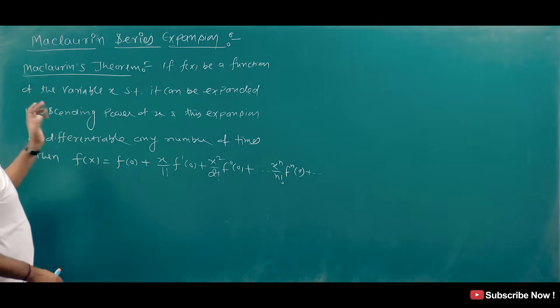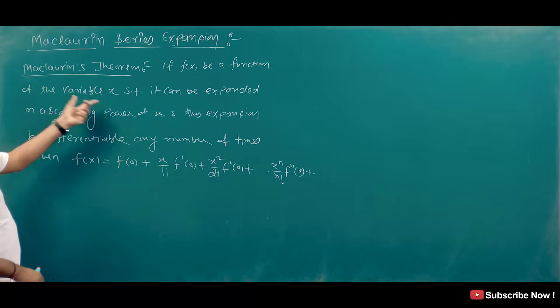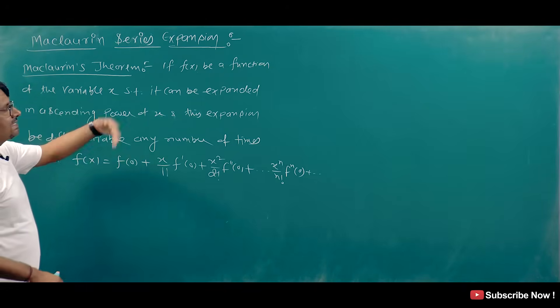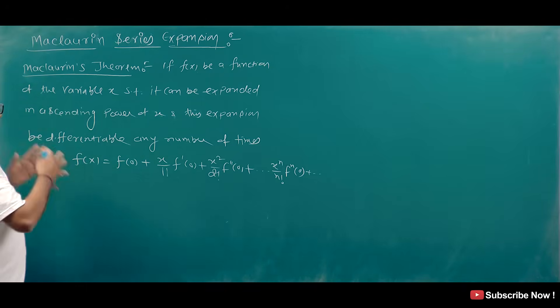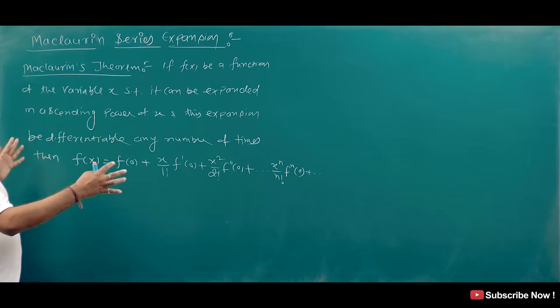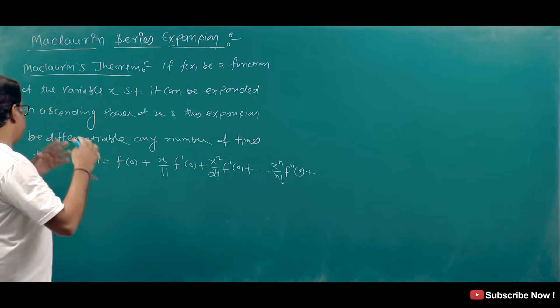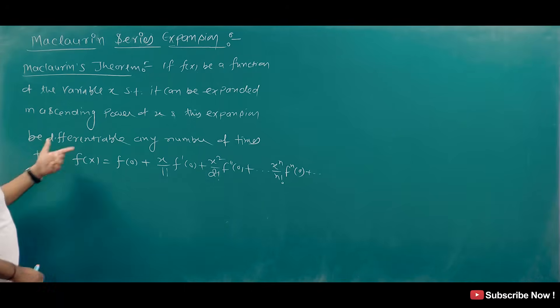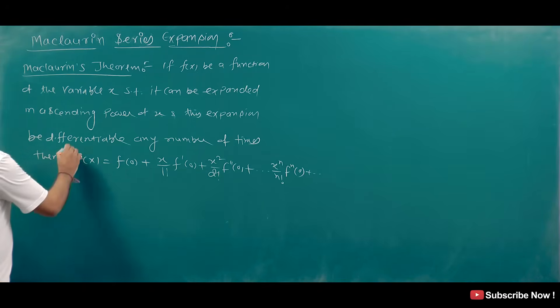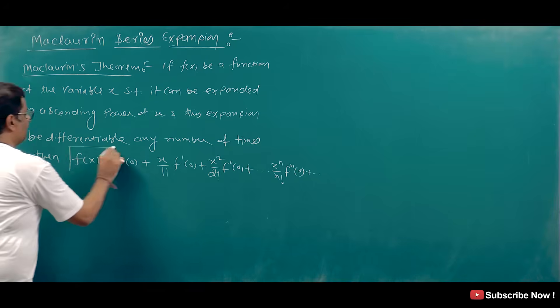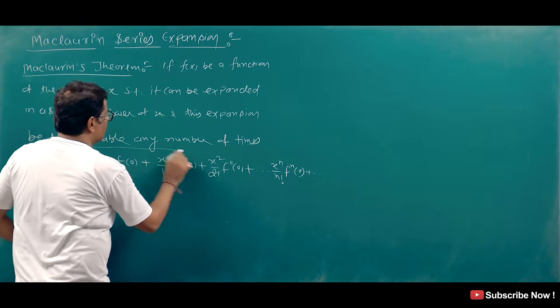Maclaurin's theorem: if f(x) is a function of the variable x such that it can be expanded in ascending powers of x, and this expansion is differentiable any number of times, then f(x) can be expressed as a series.